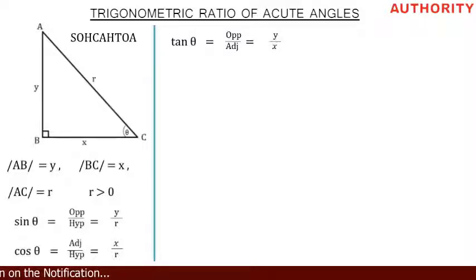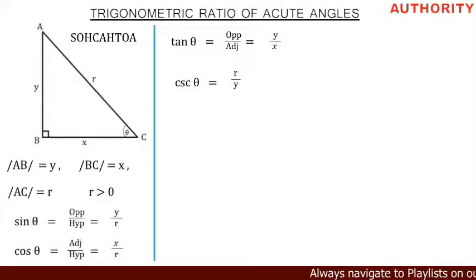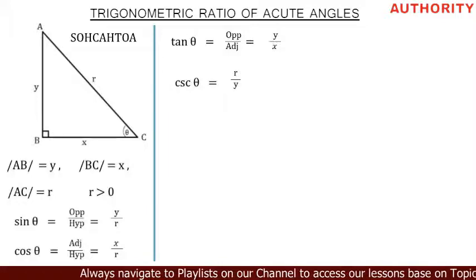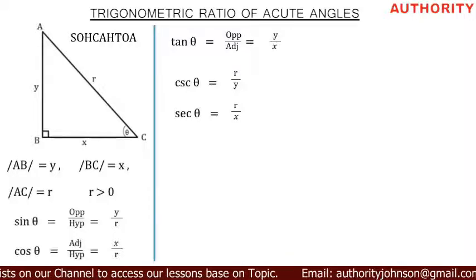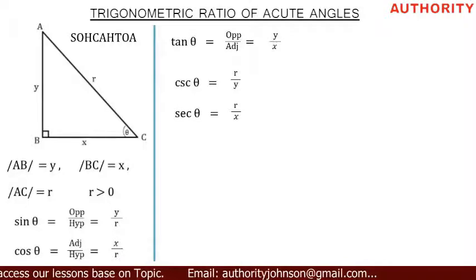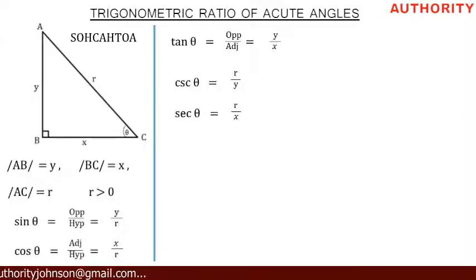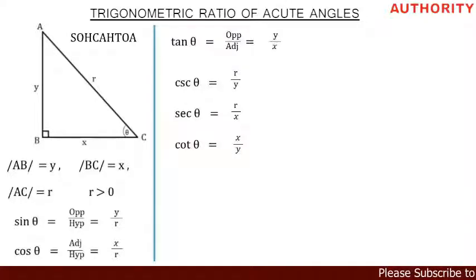Now let's consider the reciprocal functions. Cosec theta is the inverse of sine theta. Since sine theta is y over r, cosec theta equals r over y. Sec theta is the inverse of cos theta. Since cos theta is x over r, sec theta equals r over x. Cot theta is the inverse of tan theta. Since tan theta is y over x, cot theta equals x over y.